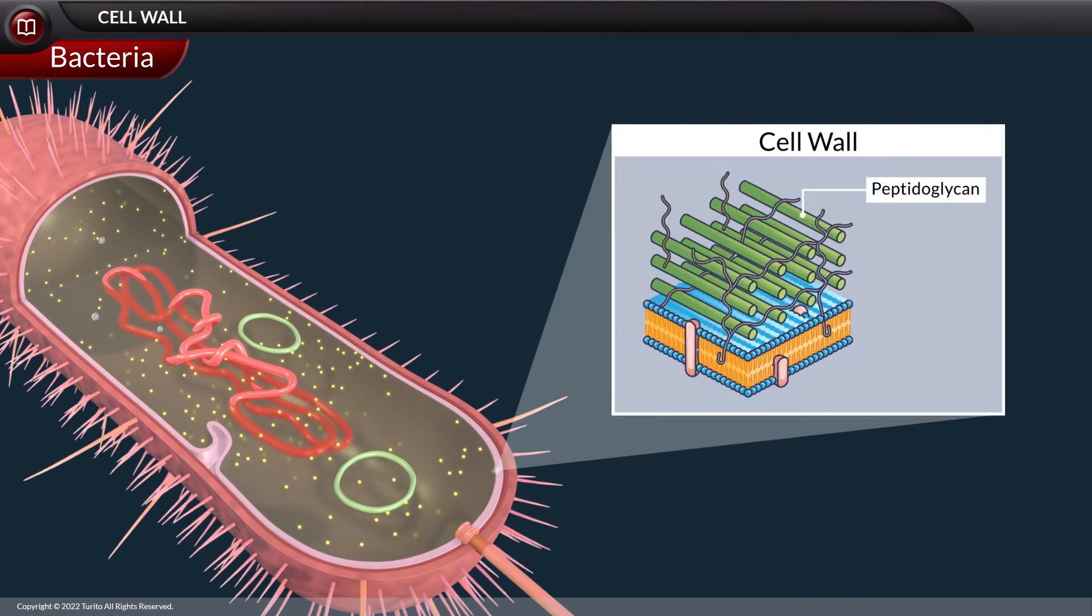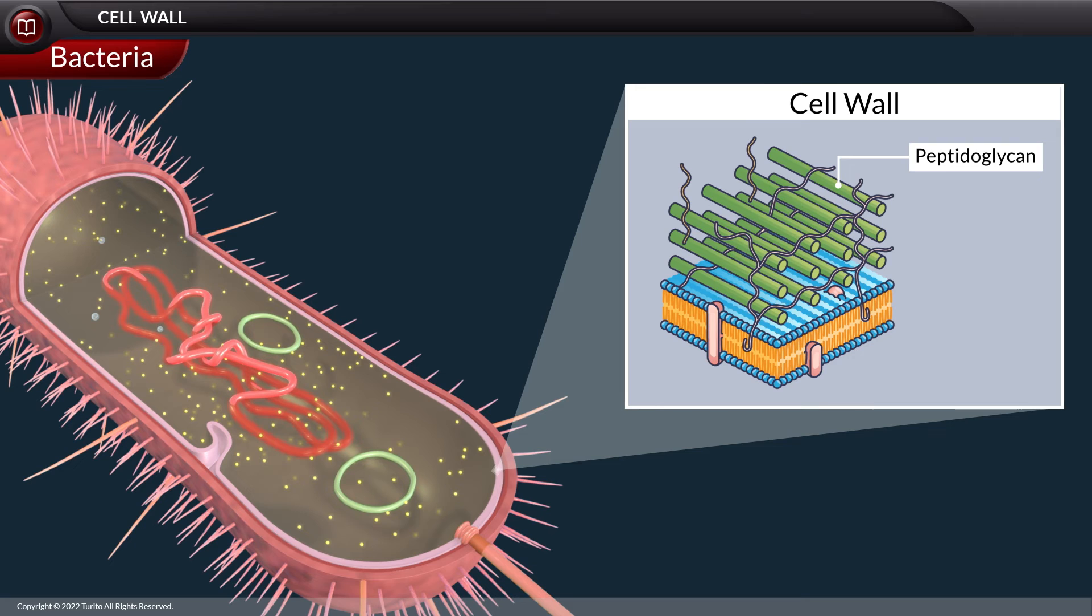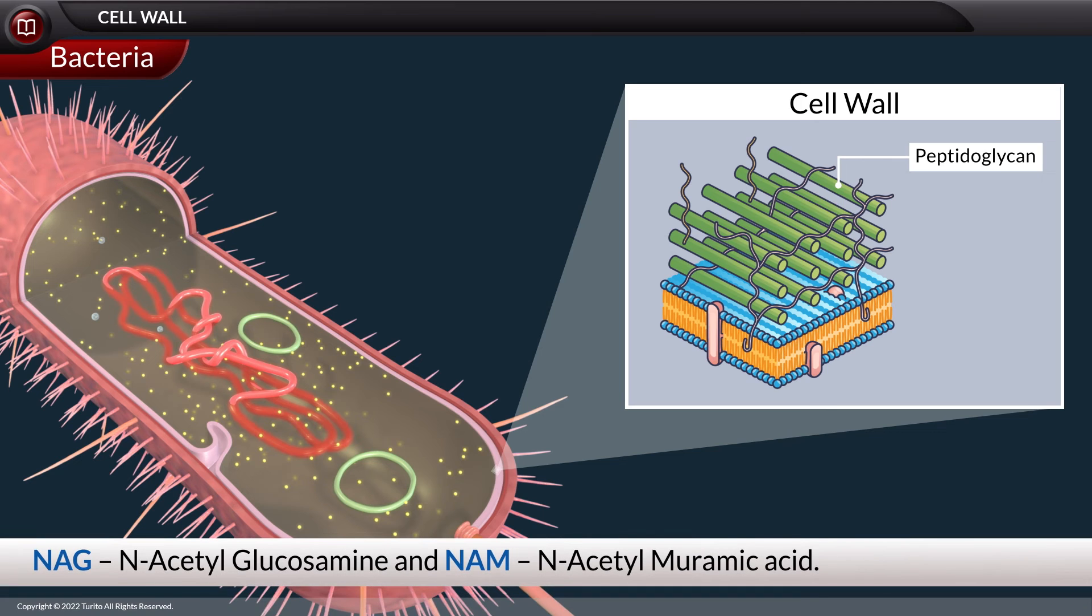Talking about the cell wall in a bacterial cell, it is made up of peptidoglycan, which is an alternating polymer of the chemicals NAG, representing N-acetylglucosamine, and NAM, representing N-acetylmuramic acid.